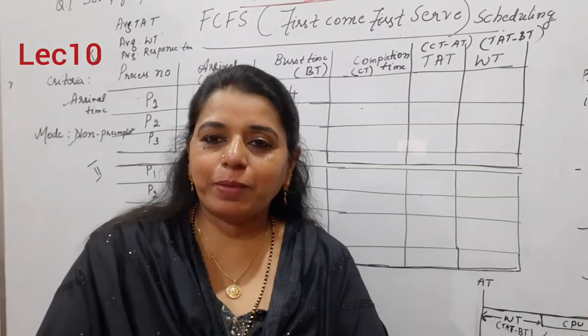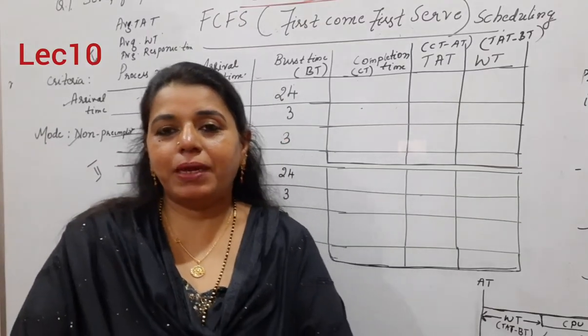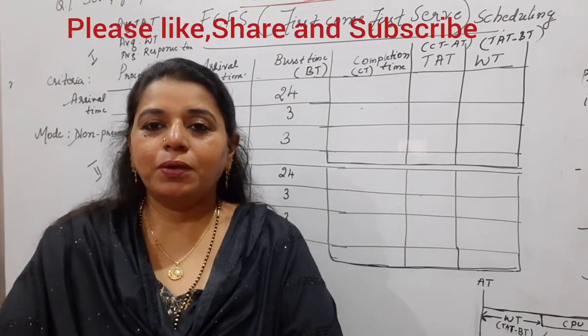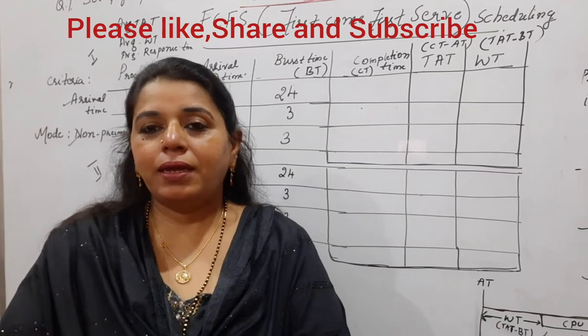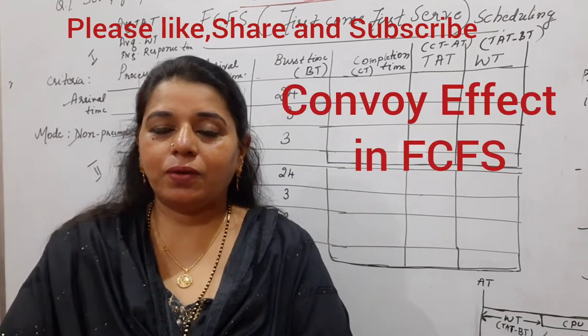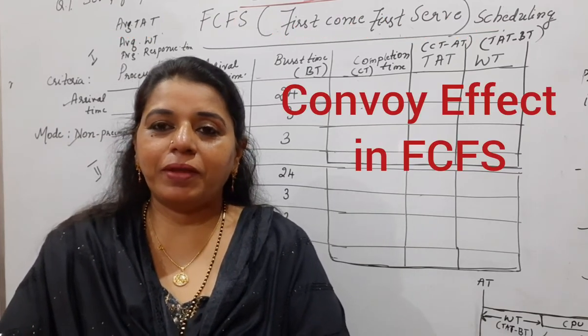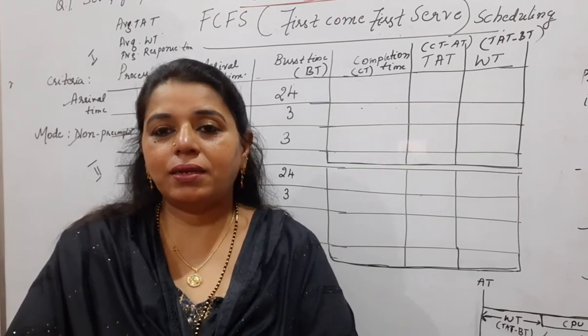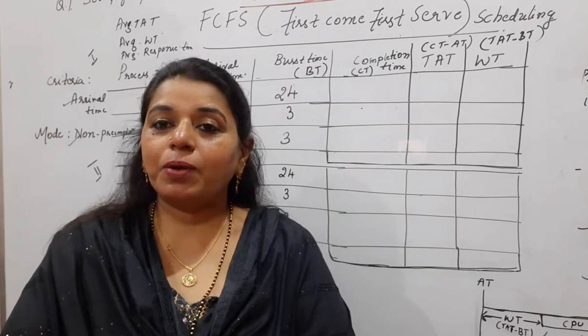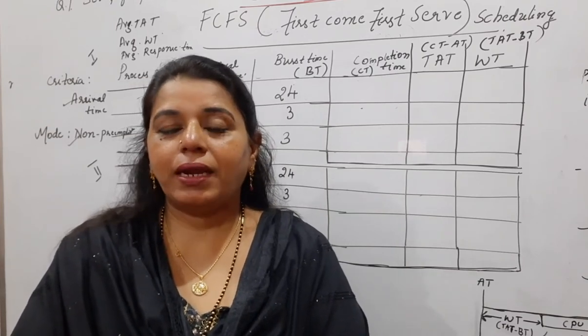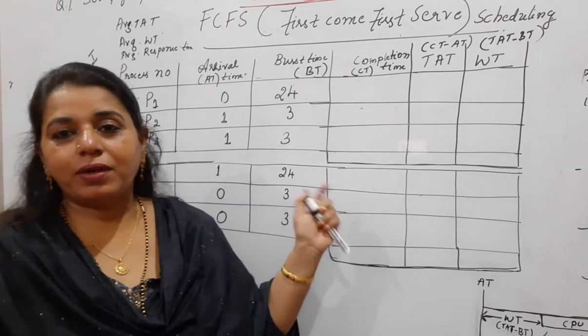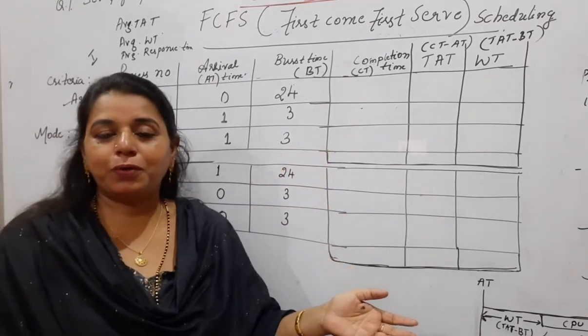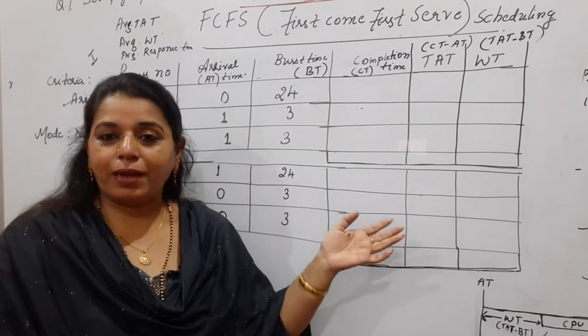Hello viewers, welcome back to my channel. In this session, I shall be explaining an example on FCFS scheduling algorithm. Though in the previous session I have explained this, here I want to show you the convoy effect. In the previous session, we saw that there is a disadvantage in FCFS scheduling called the convoy effect. So how exactly can the convoy effect be seen? For that reason, I have taken two different situations to show you how this convoy effect can be observed.